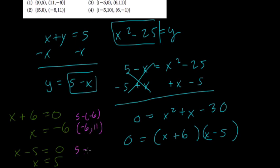The other one, 5 minus 5, which is 0. The other point then is 5, 0. We have two points now. Negative 6, 11, and 5, 0. Choice 2.